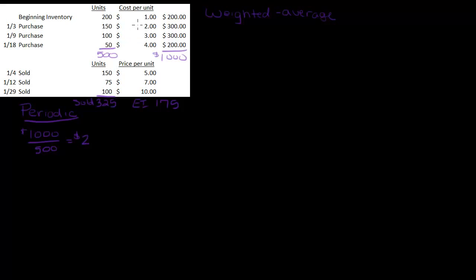The average cost is $2 per unit. Now when you're doing this calculation it makes sense to kind of do a double check. Does this $2 number make sense? Well my range, I have units at $1 at the low end and I've got units at $4 at the high end. That means that my weighted average needs to be somewhere between $1 and $4.